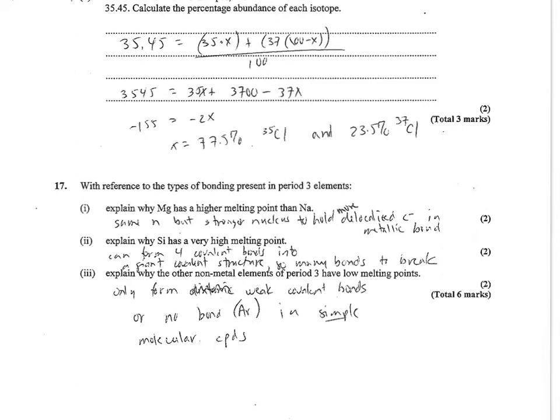And number 17, with reference to the types of bonding present in period 3 elements, you needed to mention what kind of bond it is, and then explain the trend. Why Mg has a higher melting point than sodium? They both have metallic bonds, and they have the same energy level, but Mg has a stronger nucleus to hold on to more delocalized electrons in that metallic bond. Why does Si have a very high melting point? Because it can form four covalent bonds into a giant covalent structure, which means there's a lot of bonds to break. And the other non-metal elements of period 3 have low melting points, and that's because they're only forming weak covalent bonds, or in the case of argon, no bond at all. So they're going to be very simple molecular compounds with the low London dispersion forces holding them together.